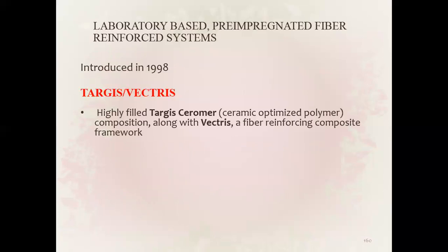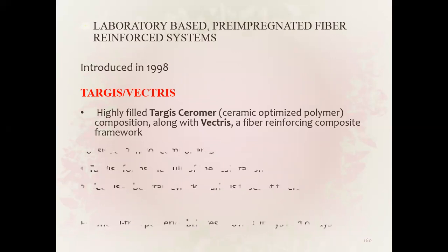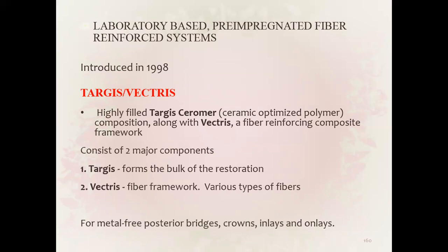Laboratory-based pre-impregnated fiber reinforced systems were introduced in 1998. Examples include Targis-Vectris: Targis is a highly filled composite — Targis Seromer composition — along with Vectris fiber reinforcement. The framework consists of two major components: Targis forms the bulk of the restoration and Vectris fiber forms the fiber framework. Various types of fibers are included. Used for metal-free posterior bridges, crowns, inlays, and onlays.